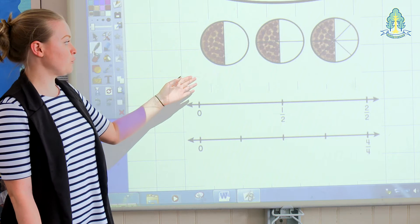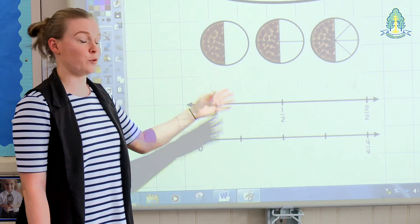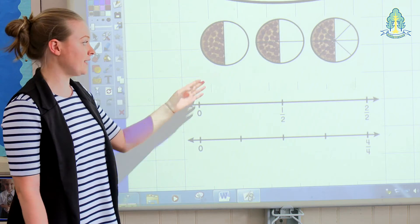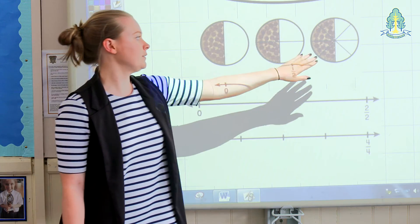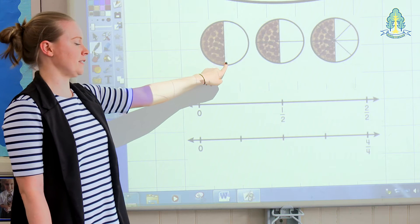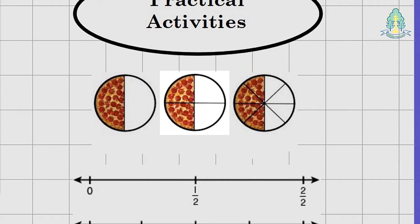Another activity that children would be asked to do would be an equivalent fractions activity like this. There are 3 pizzas here. A half is represented in this pizza, 2 quarters in this pizza and 4 eighths in this pizza.